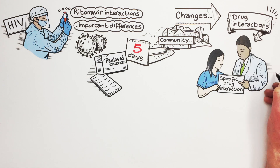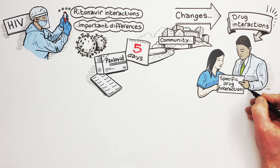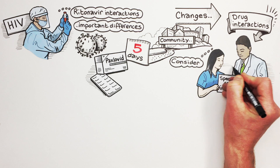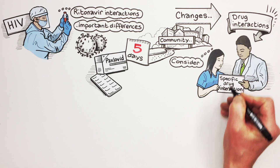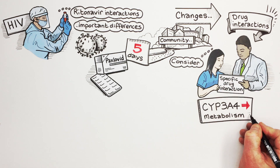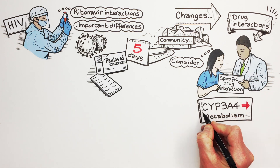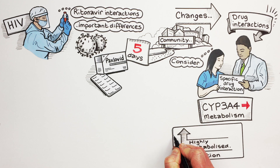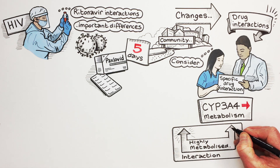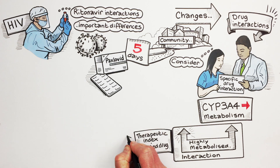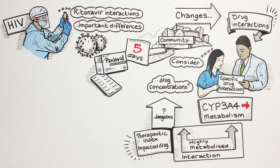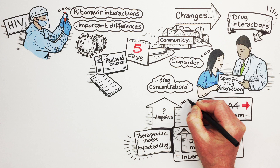When deciding how to manage a specific drug interaction, there are a few things we need to consider. For example, the contribution of CYP3A4 to the overall metabolism of the drug — the magnitude of the interaction is expected to be greater for drugs highly metabolised by CYP3A4. The therapeutic index of the impacted drug is also important: how dangerous is a rise in drug concentrations?